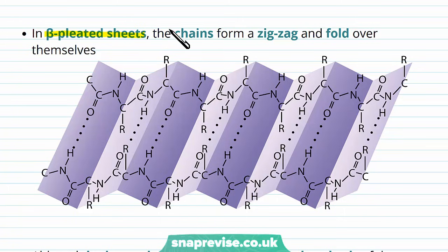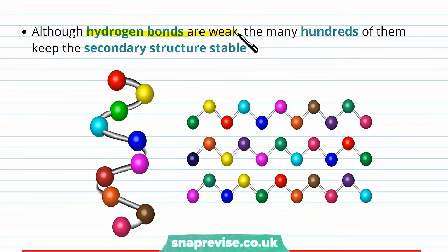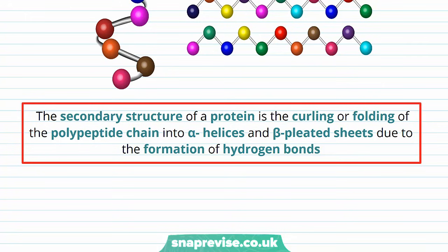It's the same idea in beta pleated sheets. The chains form a zigzag structure and fold over themselves. We have one chain of amino acids running along here and another running along here, and whenever NH groups and CO groups come into contact, they form hydrogen bonds. The hydrogen bonds hold that structure together. Hydrogen bonds on their own are weak intermolecular forces, but through the protein there'll be many hundreds of them keeping that secondary structure stable. By definition, the secondary structure of a protein is the curling or folding of the polypeptide chain into alpha helices and beta pleated sheets due to the formation of hydrogen bonds.